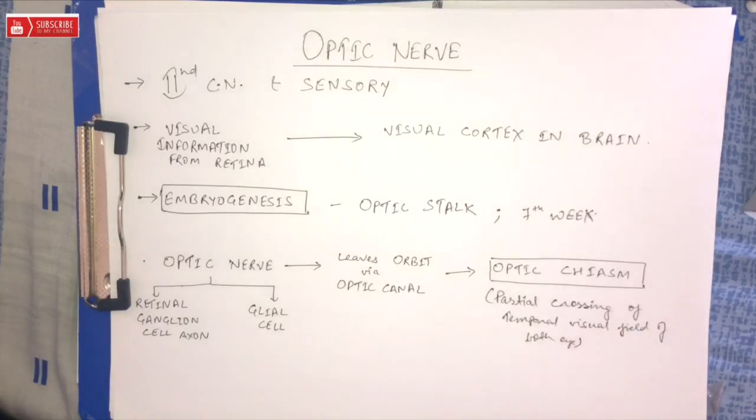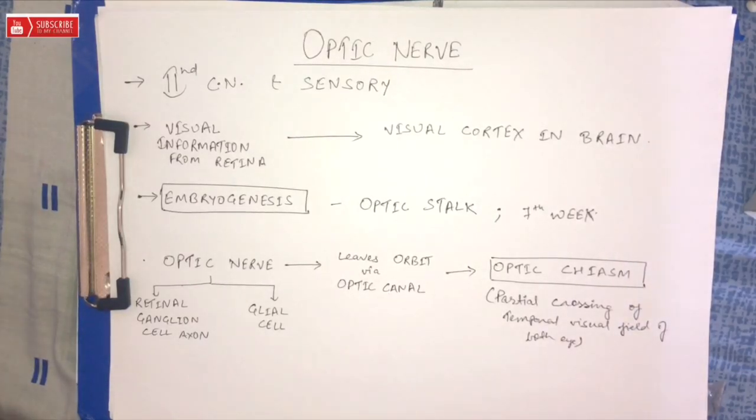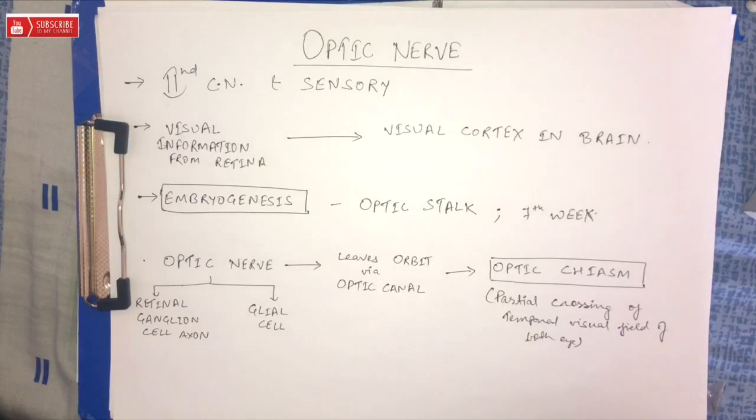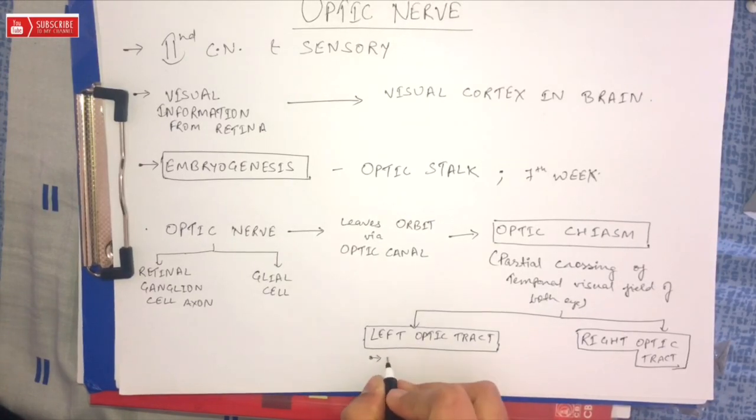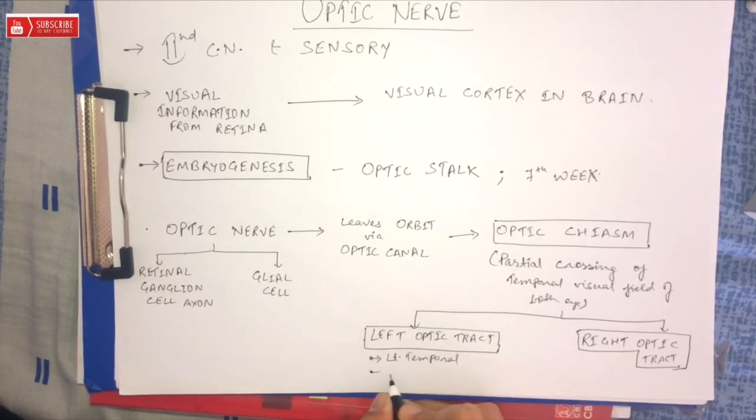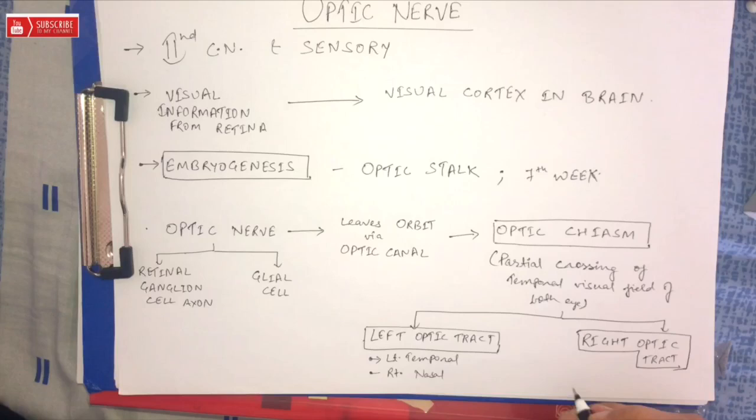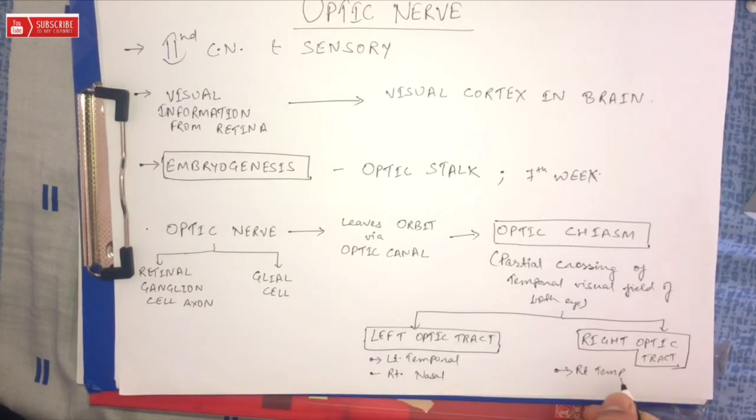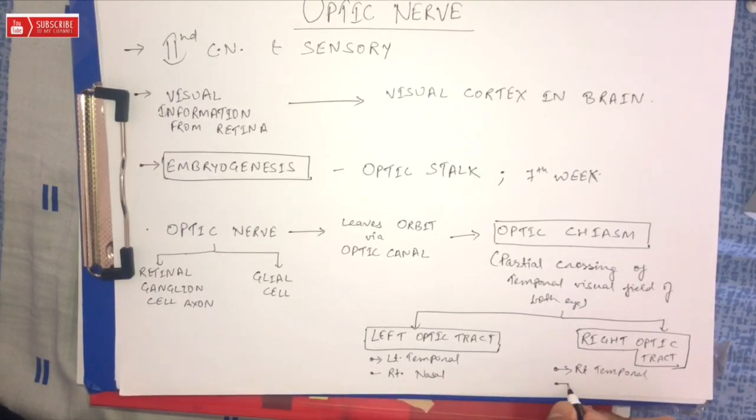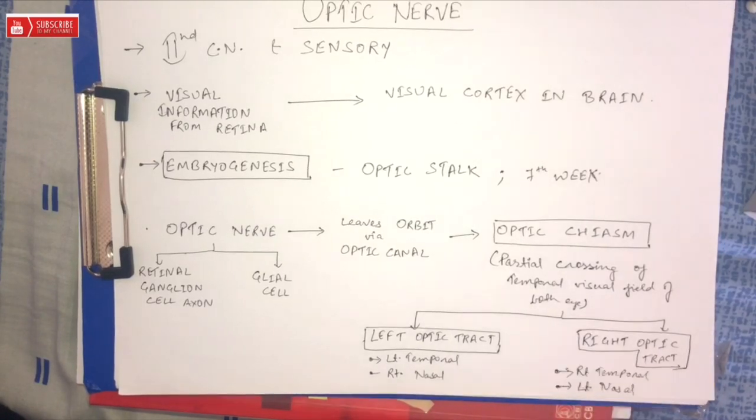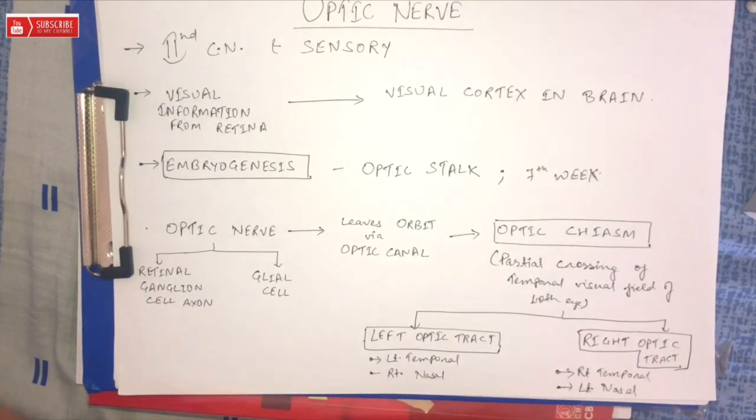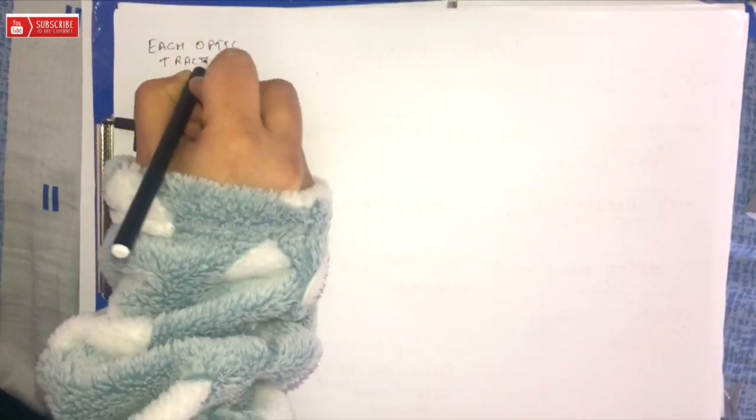While fibers from the temporal halves remain ipsilateral. The left optic tract contains fibers from the left temporal retina and right nasal retina. The right optic tract contains fibers from the right temporal retina and the left nasal retina.